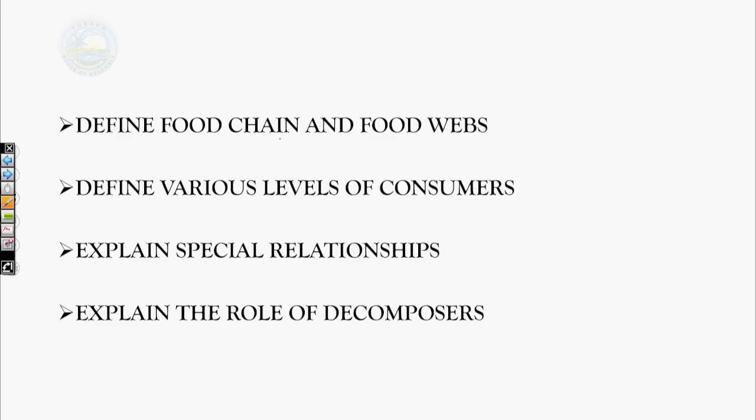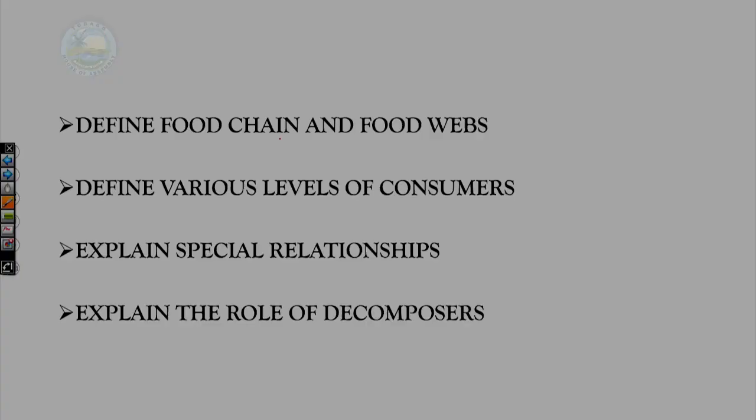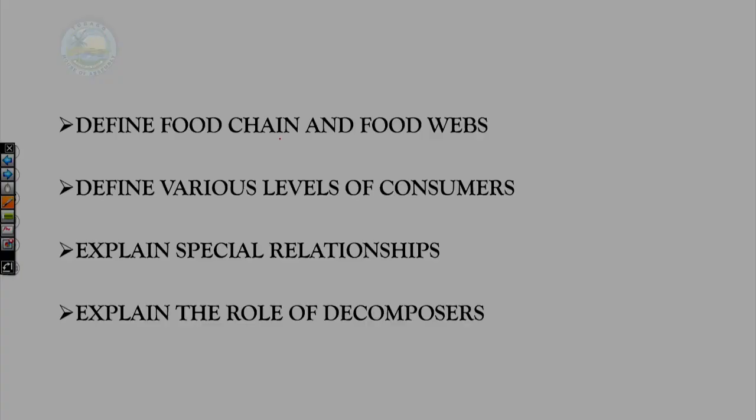Today we looked at food chains and food webs, understanding that a food chain shows the progress of energy transfer through an ecosystem. We defined various levels of consumers — primary, secondary, and tertiary — and vocabulary like predator, prey, producers, carnivores, herbivores, and omnivores. We looked at special relationships: mutualism, parasitism, and commensalism. And finally we explained the role of decomposers, which break down dead matter and release nutrients back into the environment. Thank you for paying attention. This has been brought to you by the Division of Education, Innovation and Energy. Please have a blessed day.